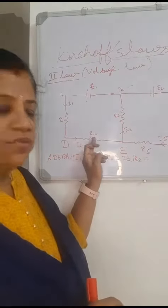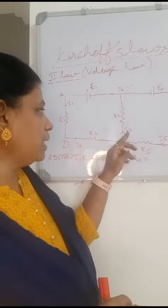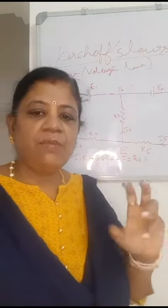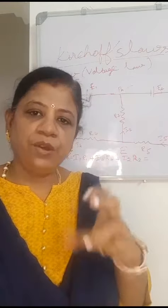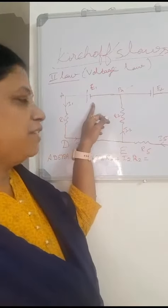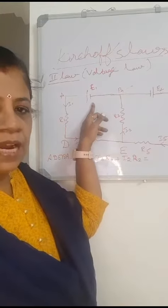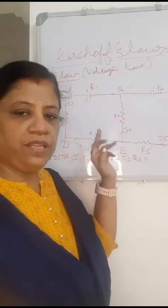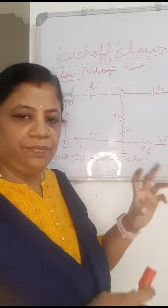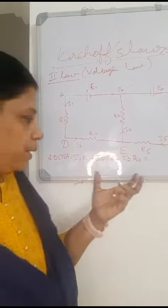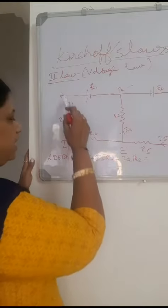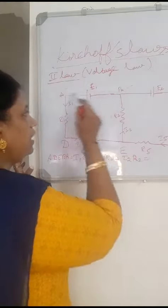Hi, now we are going to see about Kirchhoff's Second Law. Kirchhoff's Second Law is the Voltage Law. In any closed network of conductors, the product of the current and resistance in each branch is equal to the sum of all the EMF in the circuit. This is Kirchhoff's Second Law.